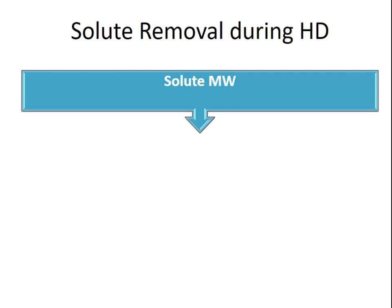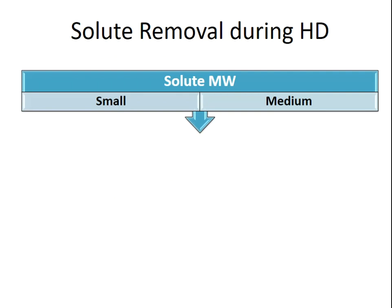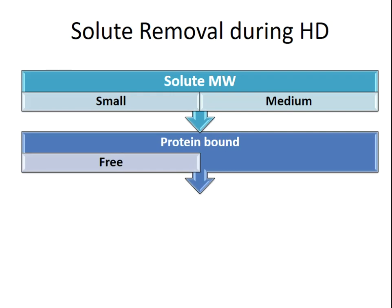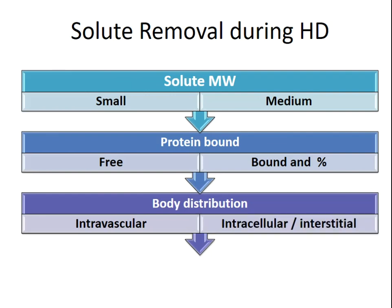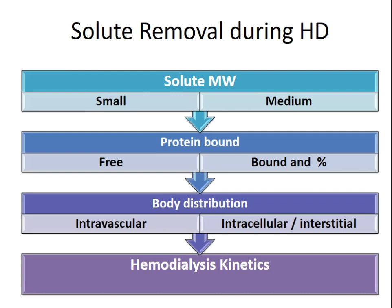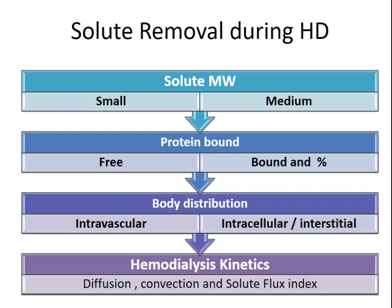Solid removal during hemodialysis depends on the solute molecular weight — smaller solutes are removed faster and better, while medium-sized solutes are removed less efficiently. It also depends on whether the solute is free or protein-bound: free solutes are removed faster, while protein-bound solutes are hardly removed from the blood. Body distribution also matters — whether the solute is in the intravascular, intracellular, or interstitial compartment — as well as hemodialysis kinetics including diffusion, convection, and solute flux.